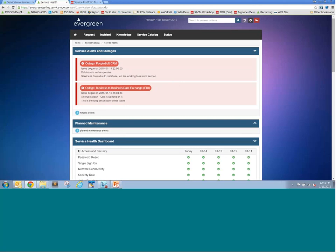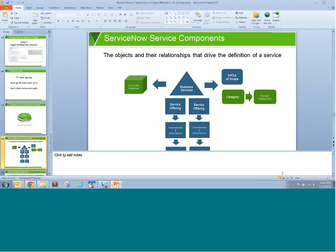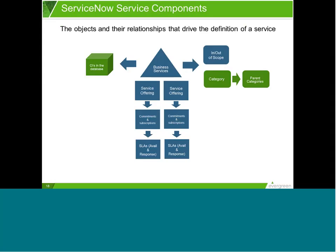Let me quickly summarize what's set up in ServiceNow. Business services at the top have a relationship to in-scope and out-of-scope information — modularized records defining what is and isn't in scope. The taxonomy is connected to the service for its category and any parent categories. CIs in the database have their dependency relationship from a health and service impact perspective. Each offering has its commitments and subscriptions as well as linkages to SLAs — whether for availability or response time.